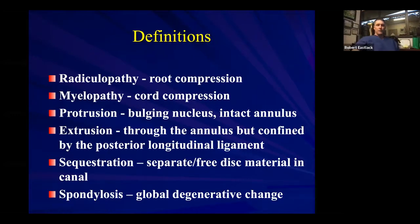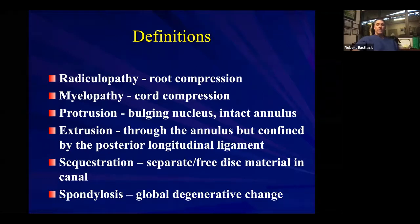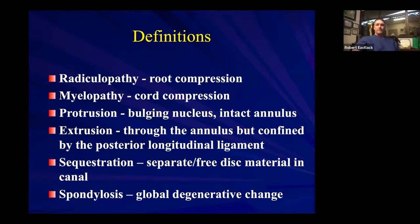When we talk about disc herniations or disc bulges, there are different terminologies that radiologists use — it's something of an art form for them and varies depending on the individual doing the reading. For consistency: protrusions are generally contained disc bulges with an intact annulus. Extrusions are when the material blows through the wall — the final perimeter of the annulus. Sequestrations are when you actually have free disc matter out in the canal, separate from the protrusion or extrusion event.